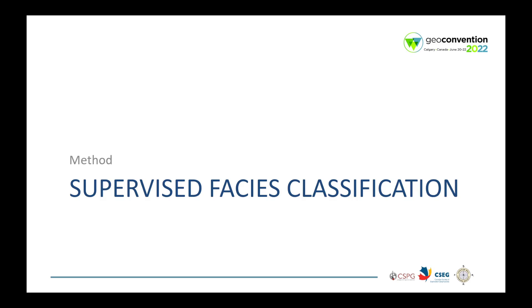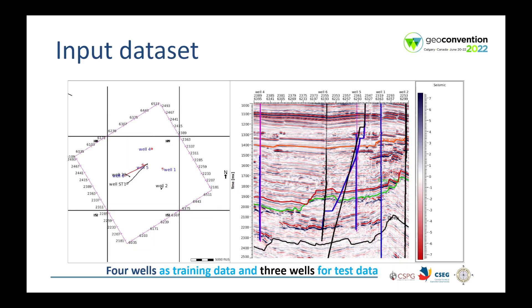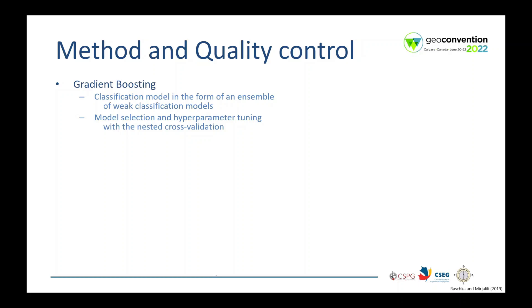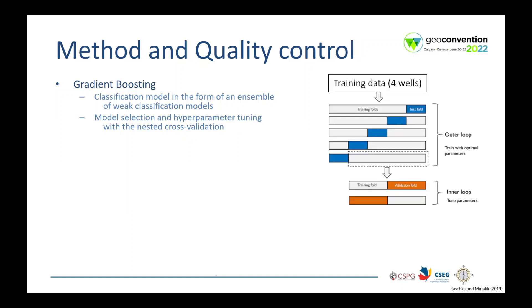Now let's go to the supervised facies classification. To perform the supervised facies classification, we divided the dataset between training and test data. The wells in blue will be used for training, and wells 2, 3 and ST1 are the test wells in black — these wells will not be exposed to the model during training. We use Gradient Boosting to perform the facies classification. It is a classification model in the form of an ensemble of weak classification models.